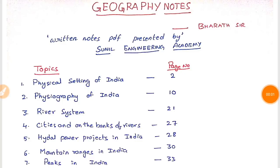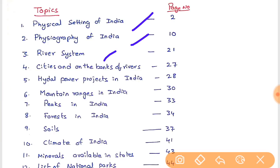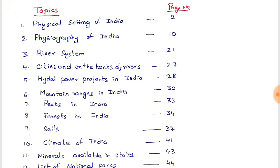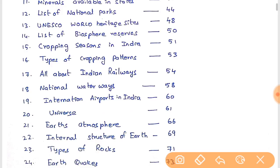Quick announcement: Geography notes have been uploaded to the Instamojo website. You can find the link in the description box below. We have covered almost 25 topics including physical setting of India, physiography of India, river system, cities and banks of rivers, hydel power projects, mountains, peaks, forests, soils, climates, minerals, and a list of national parks — there are around 104 national parks.